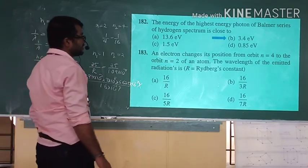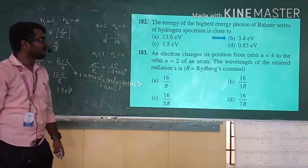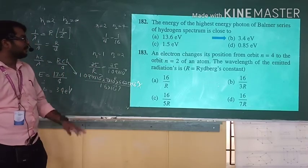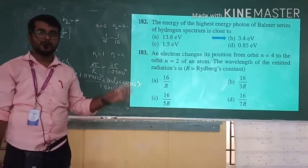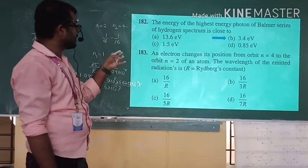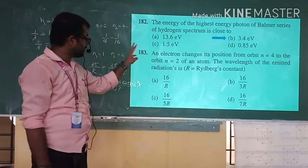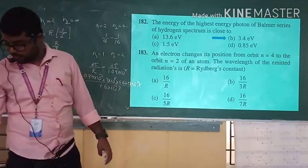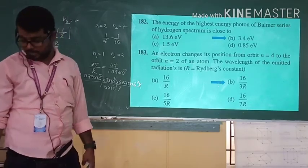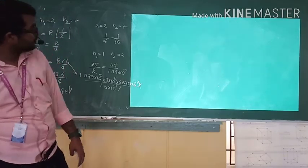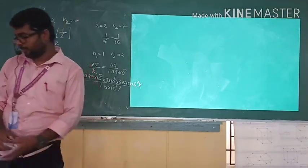An electron changes position from N = 4 to N = 2. Find the wavelength of the emitted radiation. N1 = 2, N2 = 4. Using Balmer's formula: 1/λ = R(1/4 − 1/16) = 3R/16. So λ = 16/3R. That's the final answer.